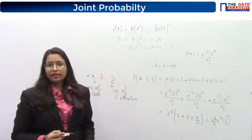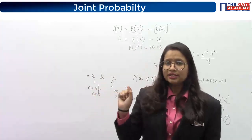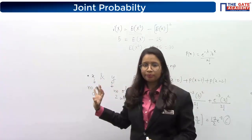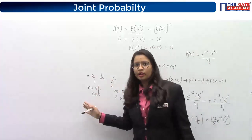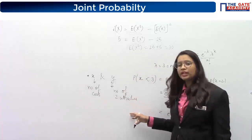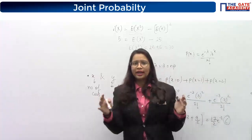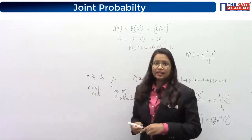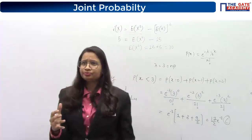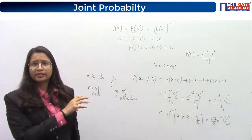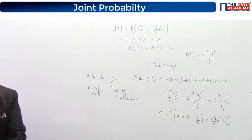All the things we have studied so far are also valid here — just that two variables are there now. In your GATE exam, these two random variables will be independent of each other. The number of cars and the number of two-wheelers do not affect each other. We will directly go to a question on joint probability, learning all the previous concepts applied to two variables.